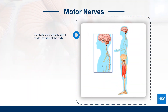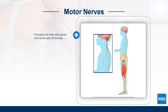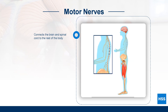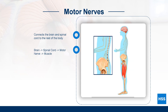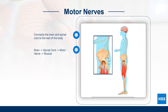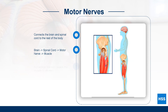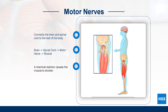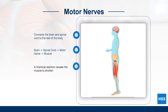Motor nerves connect the brain and spinal cord to muscles throughout the body. When someone wants to move their body, a signal that starts in the brain travels through the spinal cord and motor nerves to a muscle. A chemical reaction sent from the nerve to the muscle causes the muscle to shorten and move the bones they are attached to.